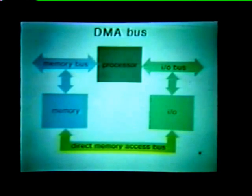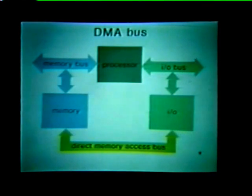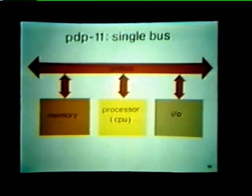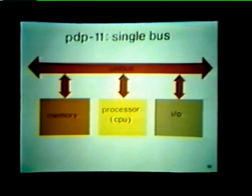However, adding a DMA bus means that the computer system now has three separate, completely independent buses. In contrast, in a typical PDP-11 system, memory, the central processor, and the I/O devices all communicate over a single bus — unlike the two- or three-bus approach used in traditional computers. Because it is one bus, it's called a unibus.